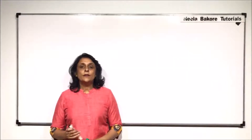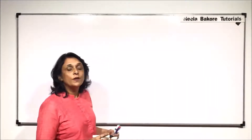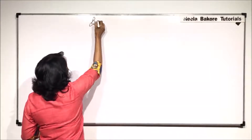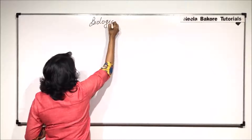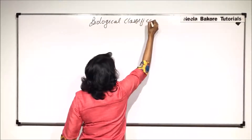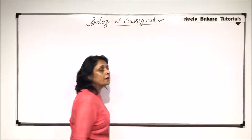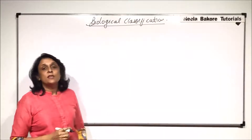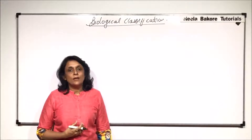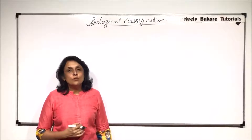We are now starting with the second chapter in this unit of Diversity in Living World, and that is Biological Classification. When we talk of Biological Classification, we need to have some historical background about how this classification system actually evolved and which is the one we are using right now.